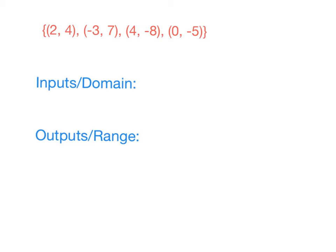So you should have written down for your domain, which is the set of all your inputs, 2, negative 3, 4, and 0. Now, a lot of times we are going to end up wanting our domain in numerical order from least to greatest. So another way to write this would have been negative 3, it's the smallest because it's negative, 0, 2, and 4. But at this point, you probably just listed this, and that is fine.